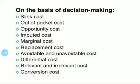The last one, conversion cost. Conversion cost is the cost of converting raw material into finished product. Thus, it is the total of direct labor cost, direct expenses, and manufacturing overheads or factory overheads. It may be noted that conversion cost excludes the cost of direct materials. These are the different classifications of cost. Thank you.